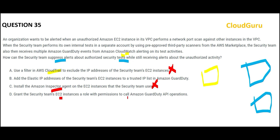Option D says we will grant the security team's EC2 instance a role to call GuardDuty API operations. This will not work, because the issue is that one instance is trying to access others and the alert is getting generated. You have to tell GuardDuty that this IP is okay.